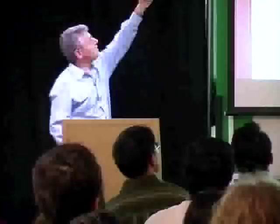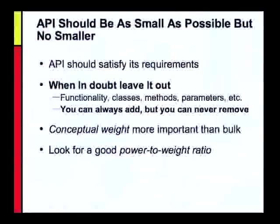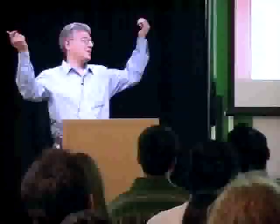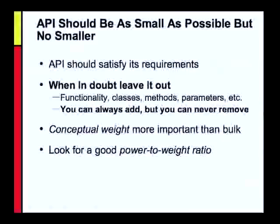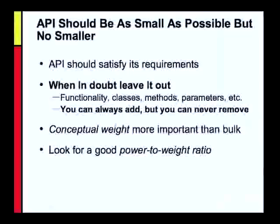An API should be as small as possible but no smaller. If you only remember one thing from this talk, please remember this: when in doubt, leave it out. That applies to everything — functionality, classes, methods, parameters within a method, anything. If you have any doubts about whether to include something, leave it out. You'll probably be able to add it later, but you most certainly will not be able to take it out once you've put it into an API. Once you put it in, people will be using it; if you take it out, they will scream bloody murder.